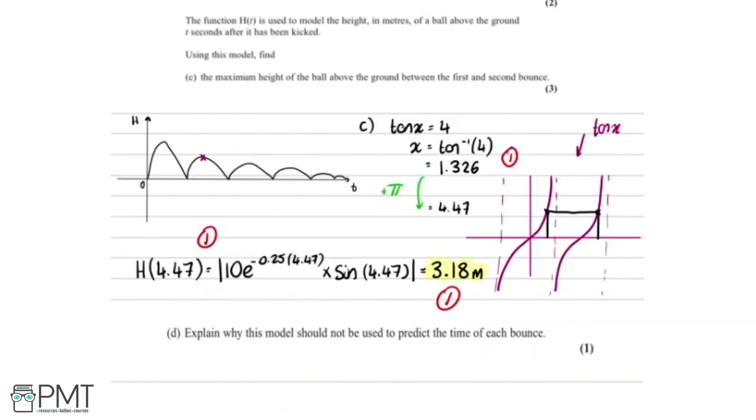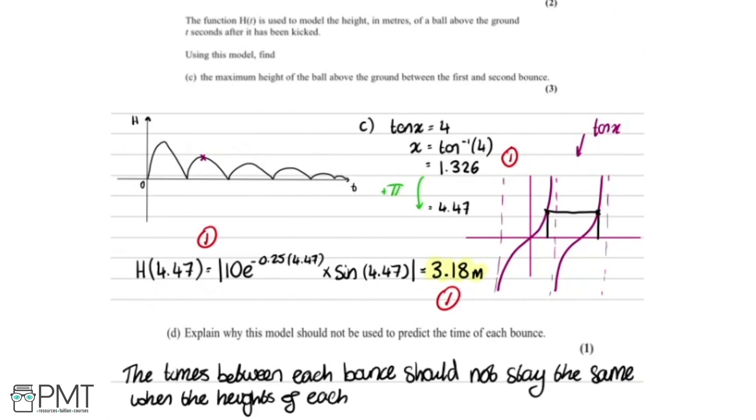Lastly, we're going to take a really quick look at part d where it says, explain why this model should not be used to predict the time of each bounce. And the reason for this is that the times between each bounce should not stay the same when the height of each bounce is getting smaller.